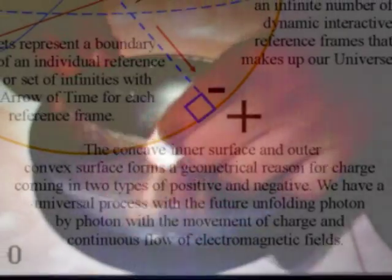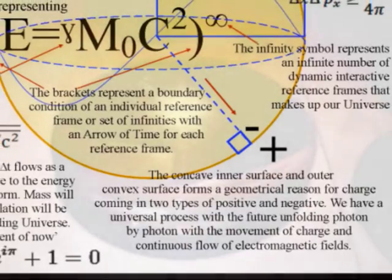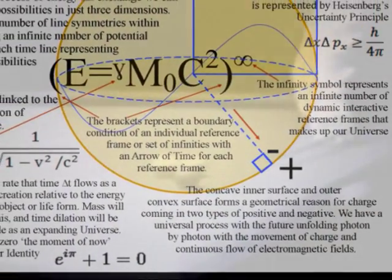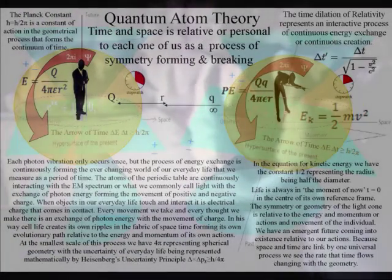This process uses the holographic principle, in the form of positive and negative charge, forming a dynamic, two-dimensional, boundary condition. Charge is an innate part of all matter. Whenever objects touch, it is charge that makes contact. And when the bonds between the atoms, form and break, there is an exchange of photon energy, with the movement of charge.